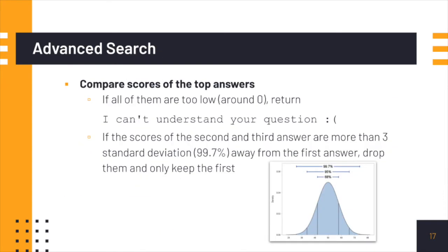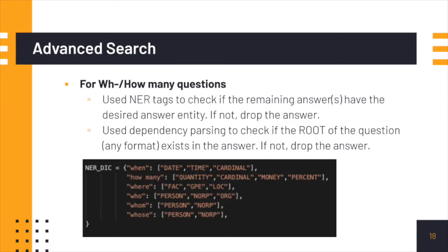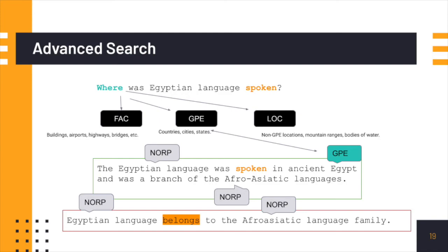Then we move on to advanced search to further filter the top three answers. First, we compare the cosine similarity scores. If all of them are too low, we return 'I can't understand your question.' If the scores of the second and third answers are more than three standard deviations away from the first answer's score, we drop them as statistically insignificant. For WH or how-many questions, we also use NER tags to check if the remaining answers have the desired answer entity type, as shown in the list. We also use dependency parsing to check the root of the question and see if it is present in the answer. For example, in a given question, the desired answer type should be a location — one of three possible NER tags. We check the answers and find the first one has the desired type and contains the root of the question.